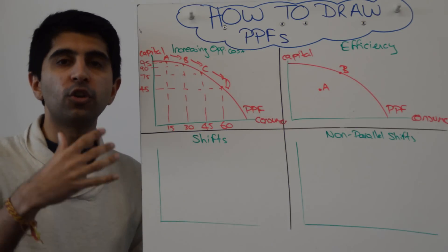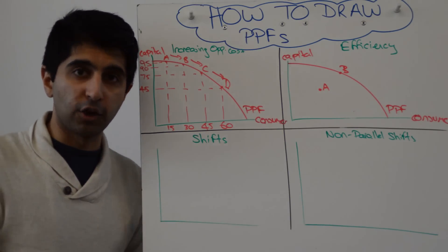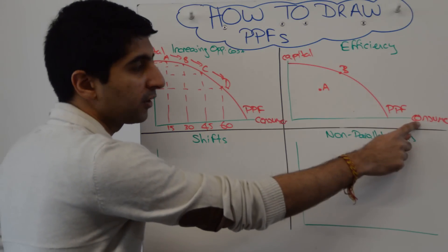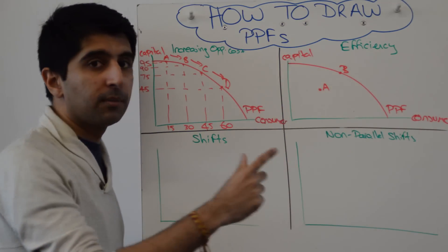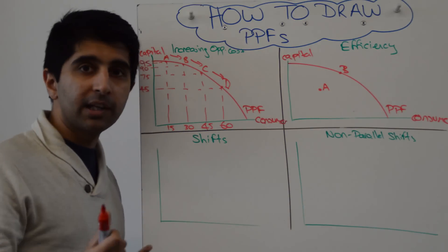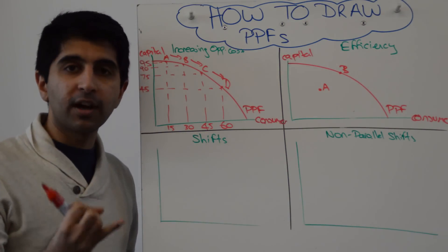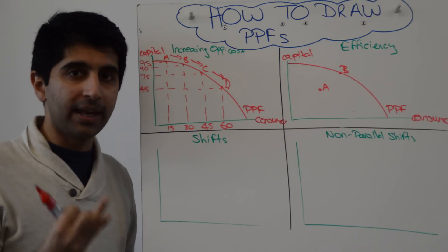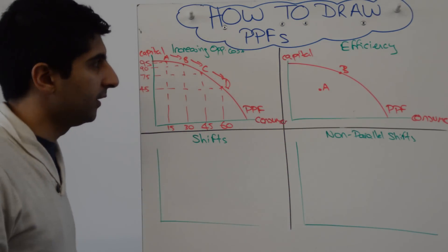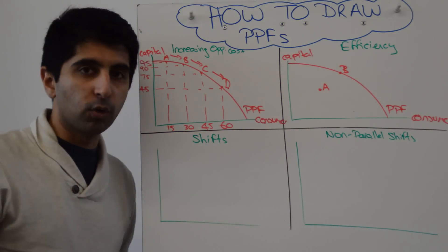We can't produce one more unit of one good without sacrificing a unit of the other good. If that's the case, then we must have Pareto efficiency. You can't increase the production of one without reducing production of the other. We can show, on the curve, productive efficiency and Pareto efficiency. Inside the curve, we can show productive inefficiency and Pareto inefficiency. Point A, both inefficiencies. Point B, both efficiencies. We can't show allocative efficiency on a PPF. It depends what consumer demand is.